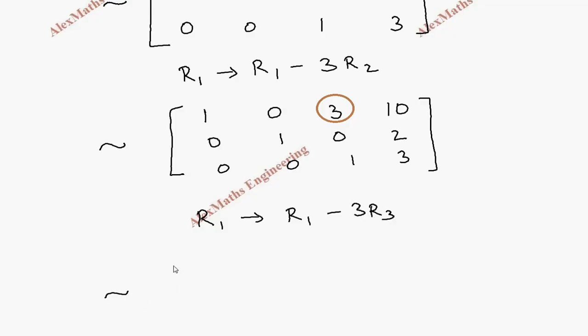So the augmented matrix will become, this is 1 because the r3 is 0. This is 0 because both are 0. And here it is 3 minus 3 is 0. Then 10 minus 9, which is 1.